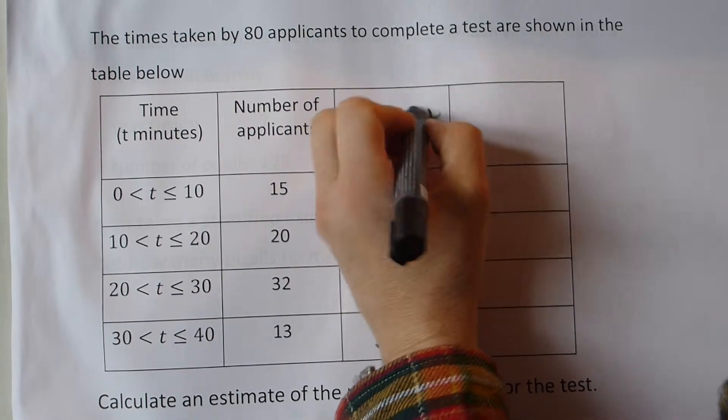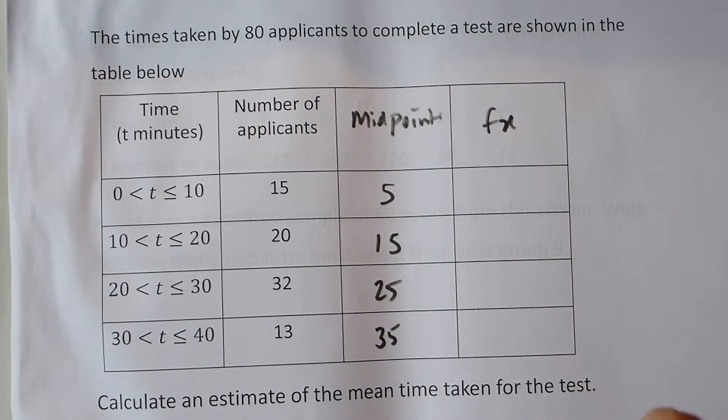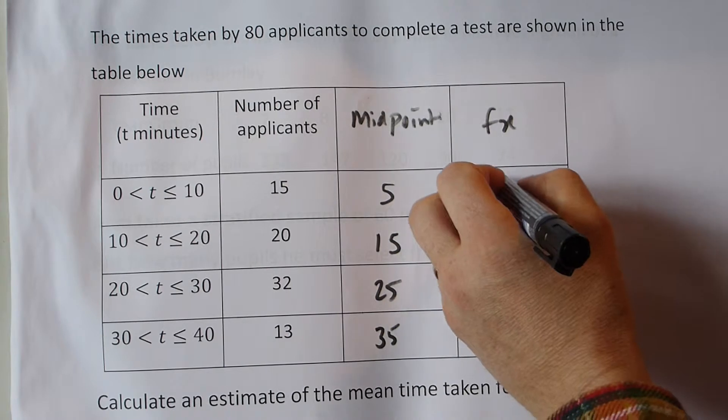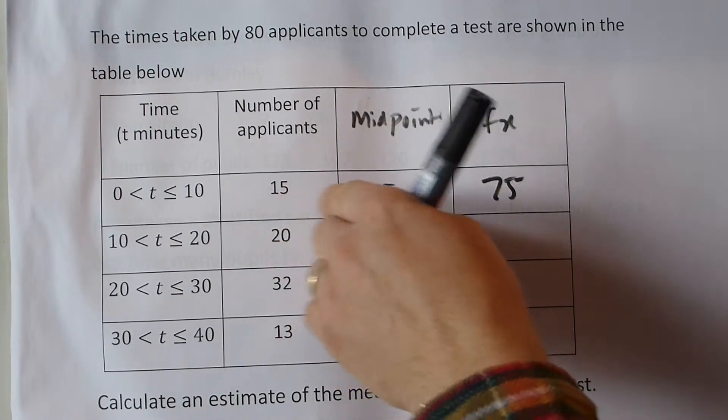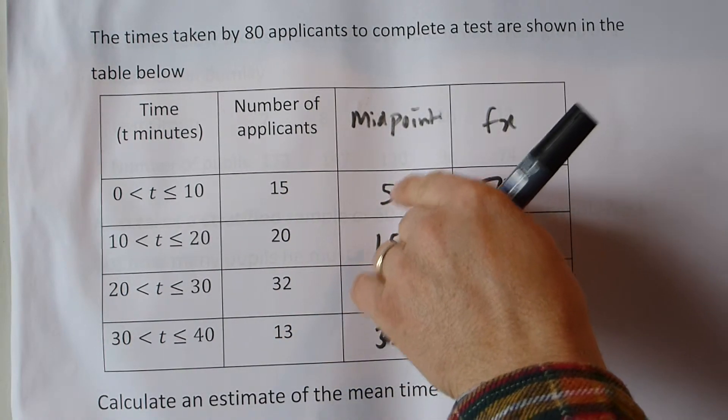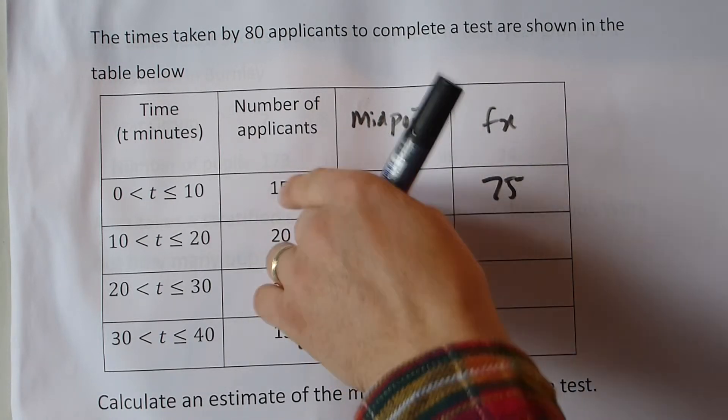To calculate the mean, we need the FX column. So we've got 5 lots of 15, that's 75 minutes. Now that's only an estimate because as I said, we don't know exactly what they took, but we're assuming that on average they took 5 minutes. So if each one took 5 minutes, then 15 times 5 is 75.